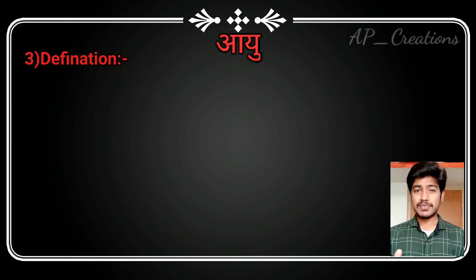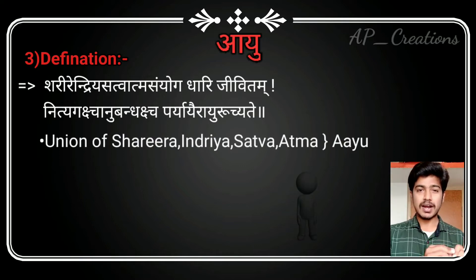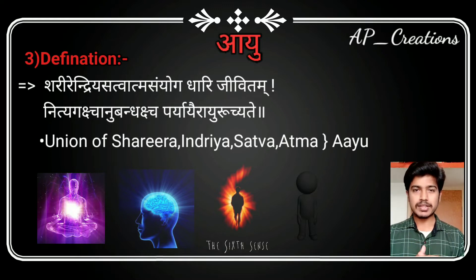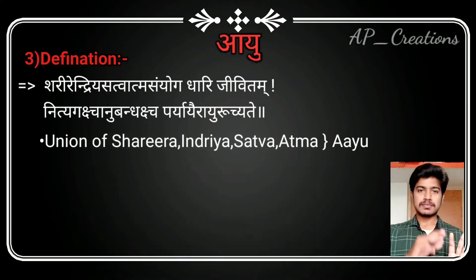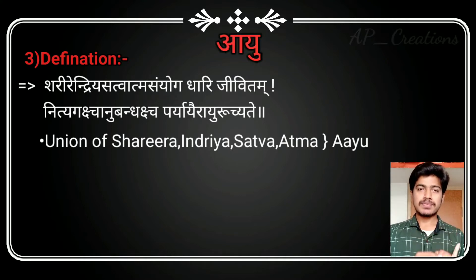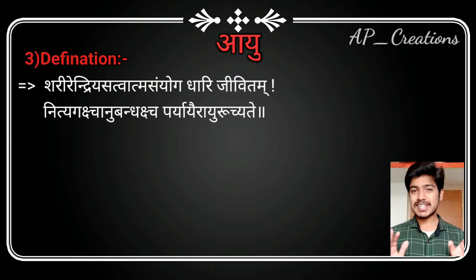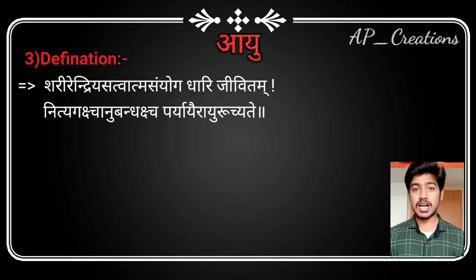The definition is the same as the synonym pariyaya you just read. The definition tells about the union of sharira, indriya, sattva, and atma — these four combined together form ayu, or life span. Sharira is the body, indriya the sense organs, sattva the mind, and atma the soul. These four constitute ayu.